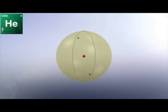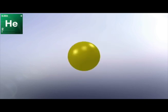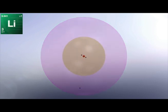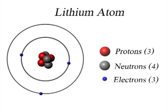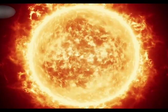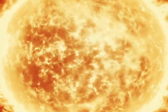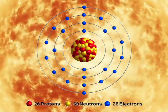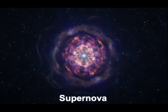Bigger atoms of the other elements are made the same way. That is, hydrogen and helium join together with more neutrons to make lithium atoms — it has three positive parts held together with neutrons, circled by three electrons. Over time, the same process repeats inside stars to make elements up to iron. Elements above iron are made when old stars explode.